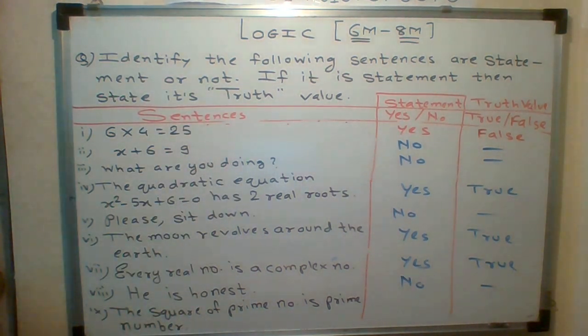The square of a prime number. Let us take one of the prime numbers. Let us take 5 is a prime number. What is square of 5? 25. 25 is not a prime number.